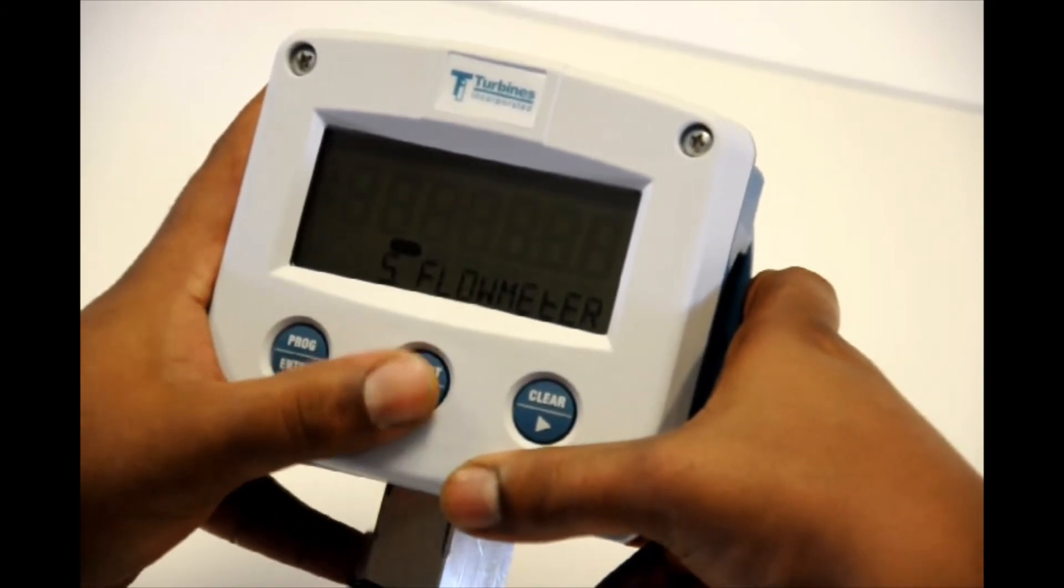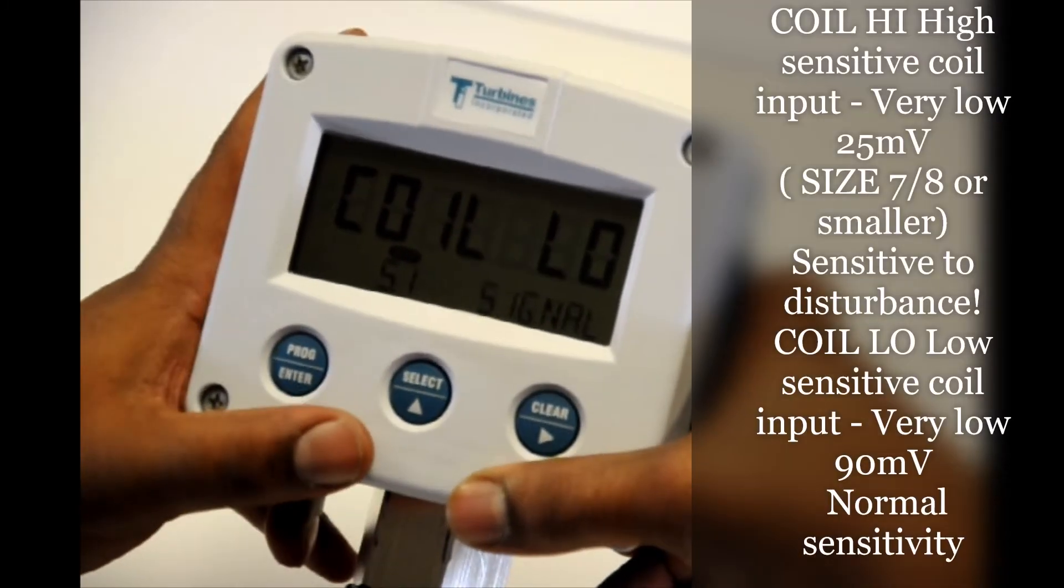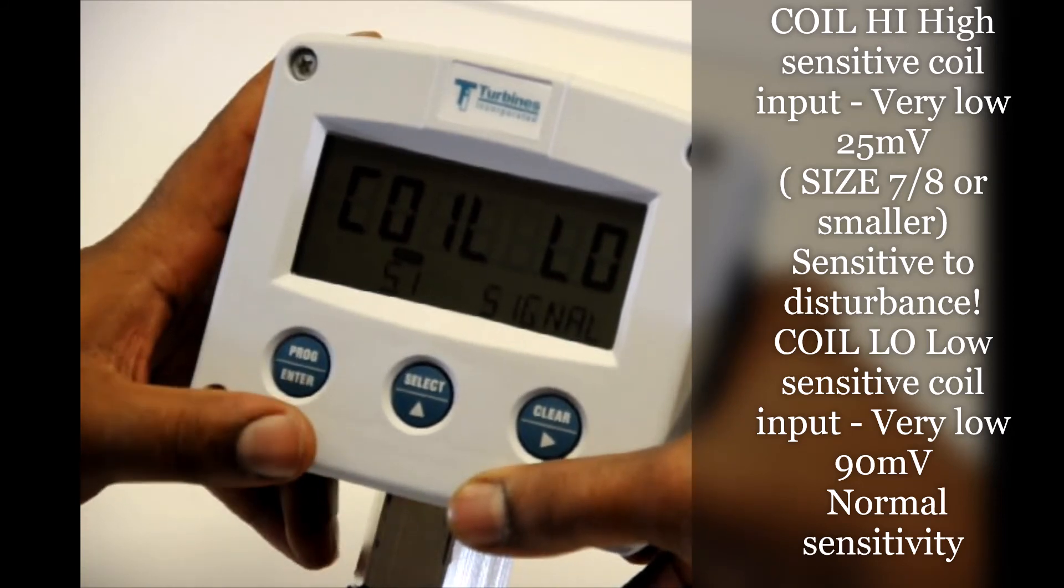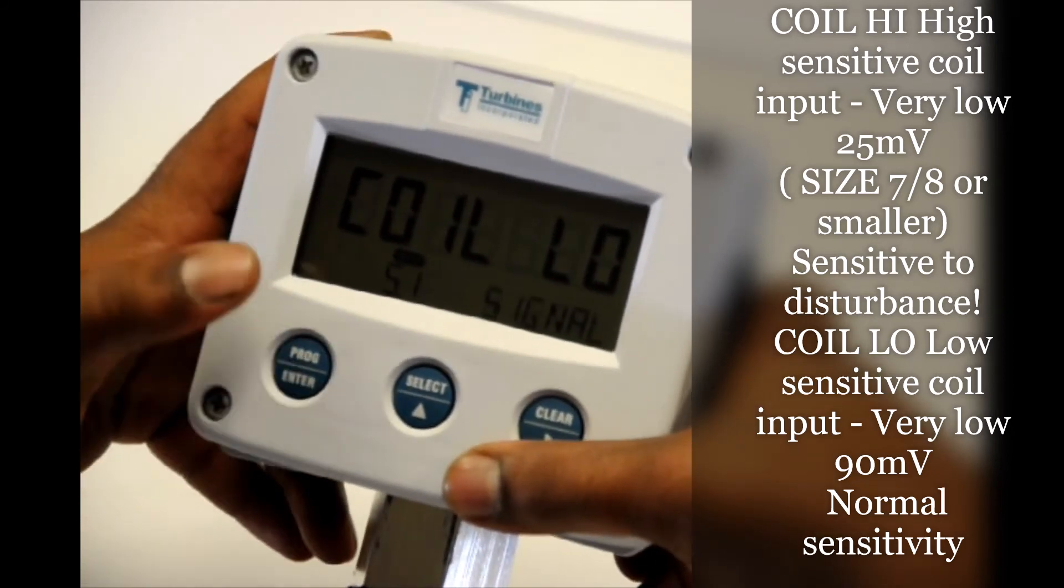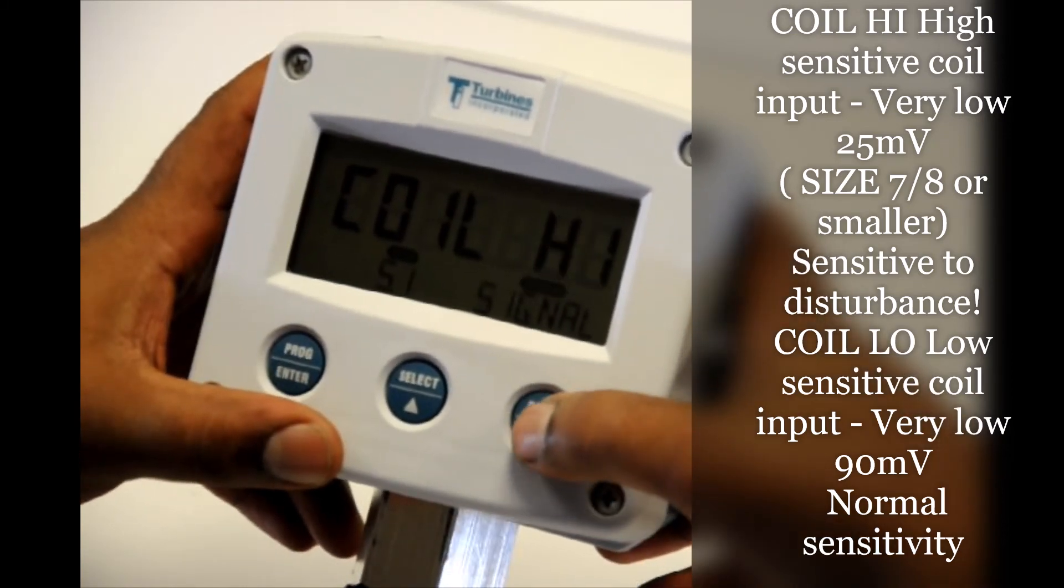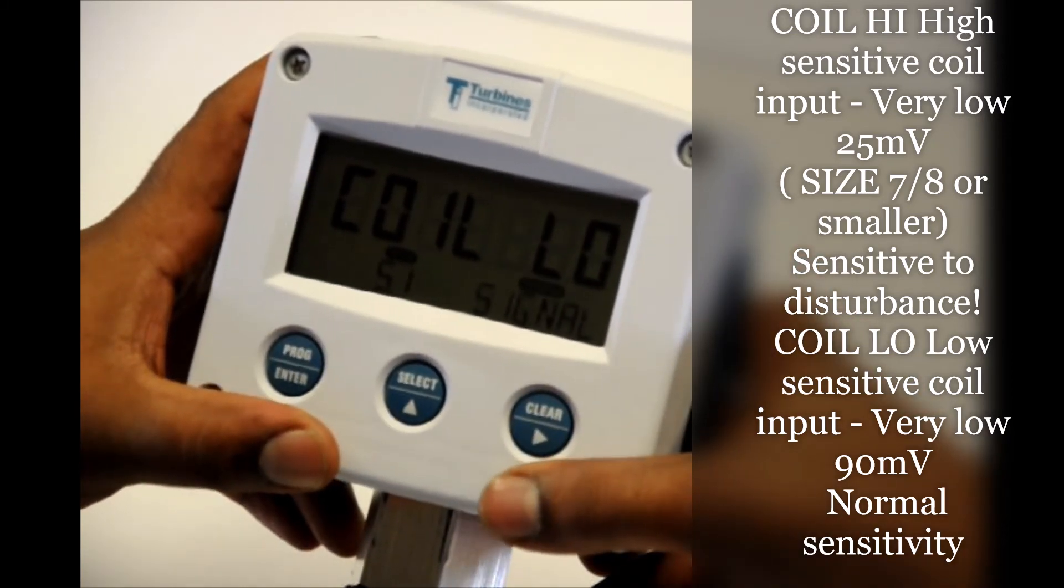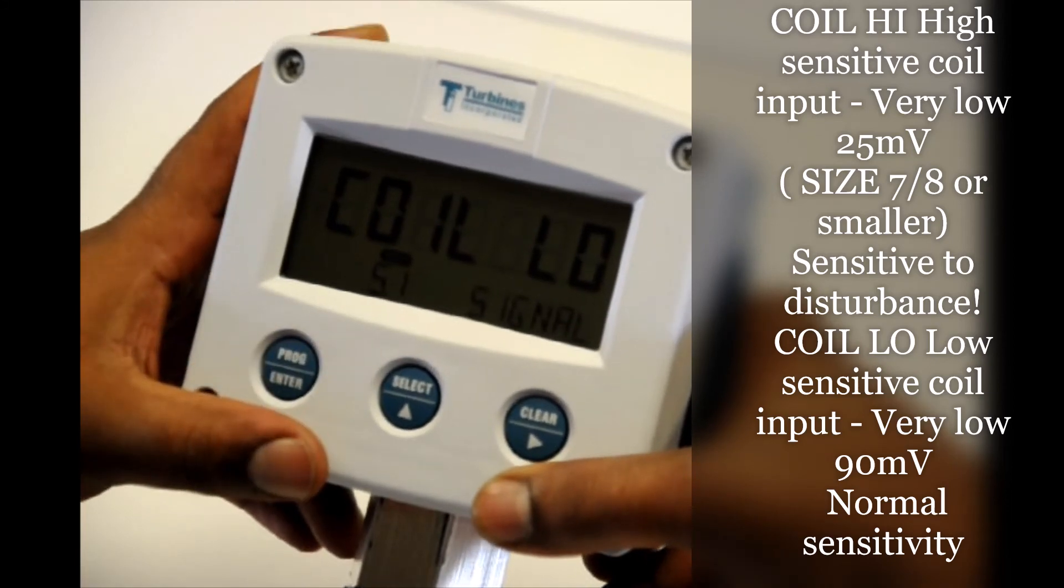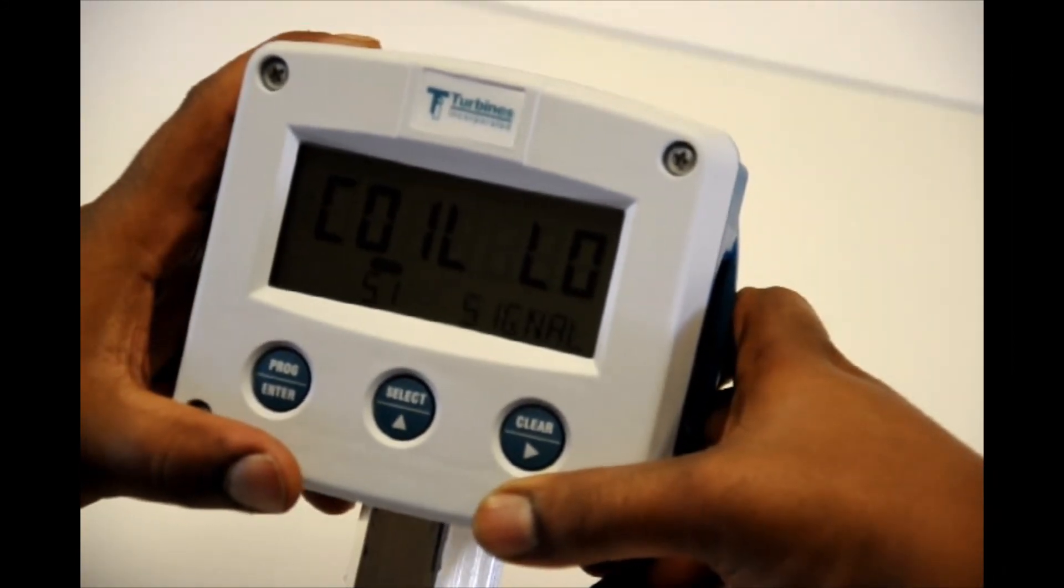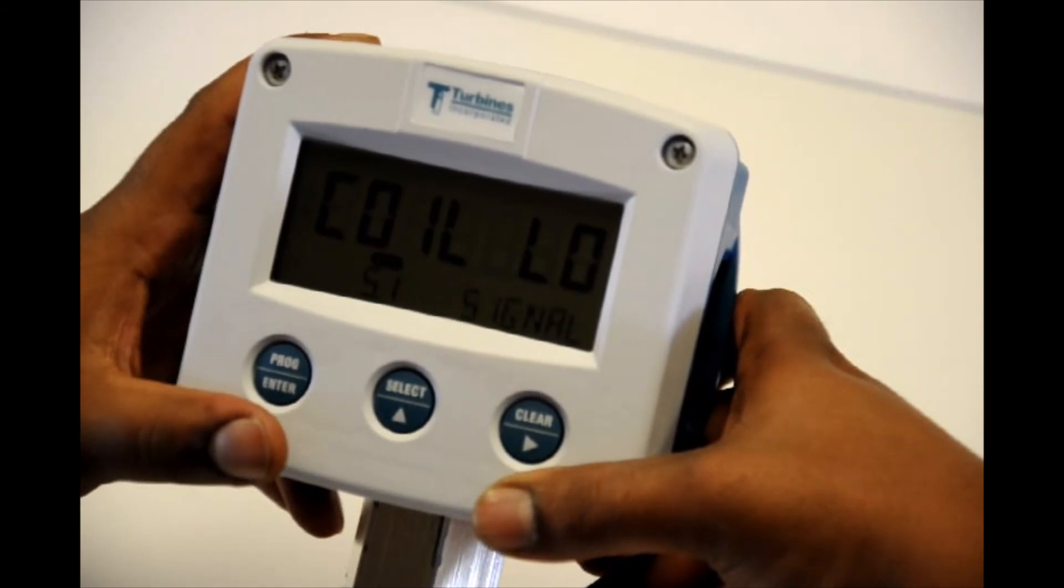You're going to hit select. And if you see anything besides coil load on your signal you want to make it coil load. So in this case it's already set to coil load. So if you needed to change that hit program enter. Hit clear so you find coil load. Hit program enter. Lock it in. And that way you can filter out any extra noise or turbulence from the meter that you might get and it won't pick it up as a pulse.